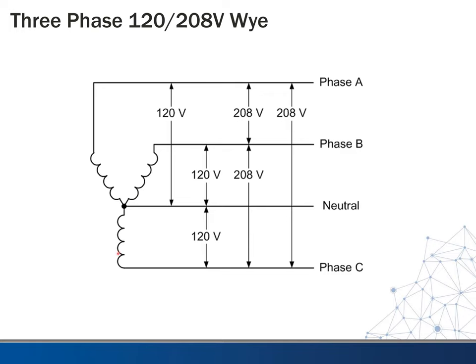Looking at the wiring diagram: we have three transformers, but instead of a triangle shape they're connected in a Y shape, with one common connection between all three — that's our neutral. Between the neutral and each of the phases, a voltmeter would read 120 volts. Between each phase-to-phase, we get 208 volts. This is a much better understood service configuration — there's no danger, no high leg, nothing that could give us any problems.